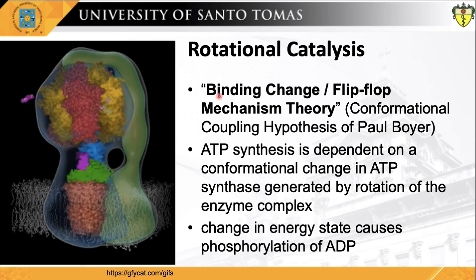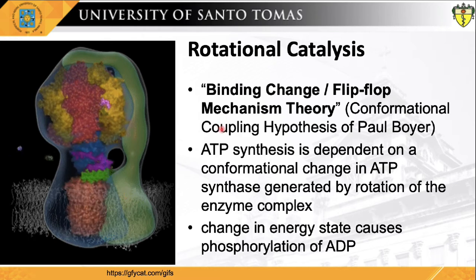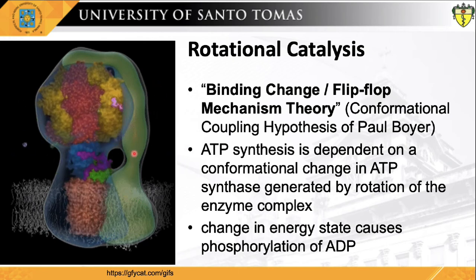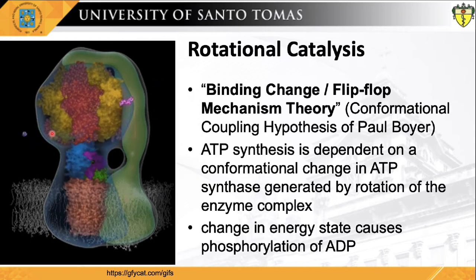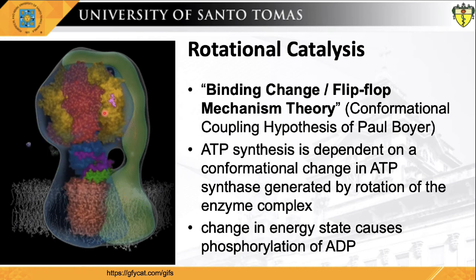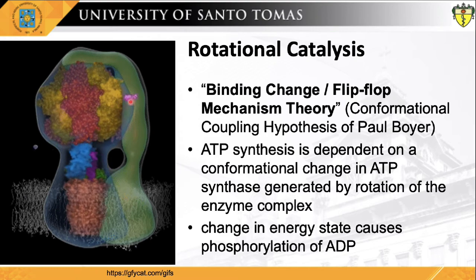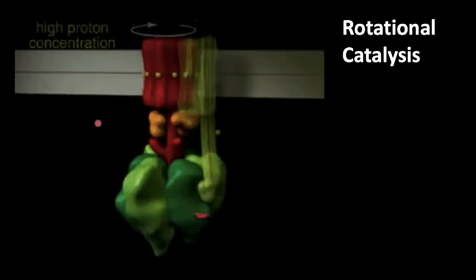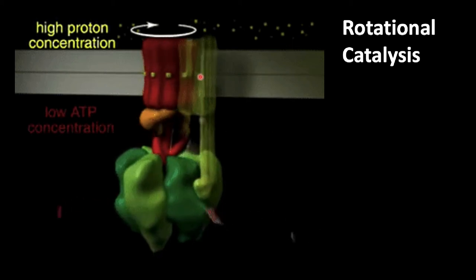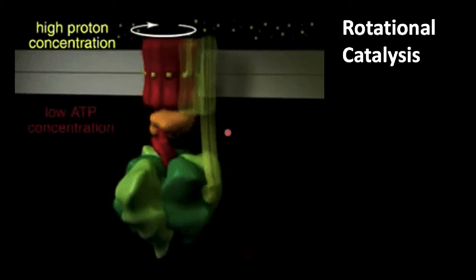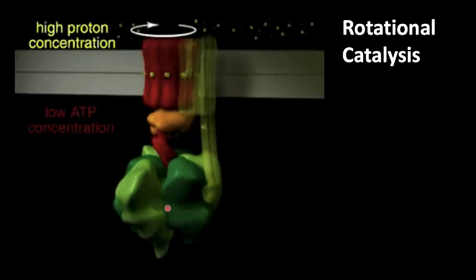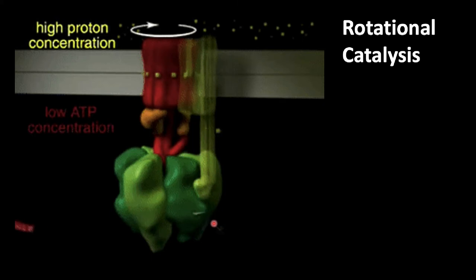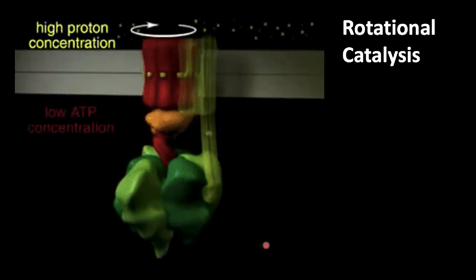The binding change or flip-flop mechanism theory, or the conformational coupling hypothesis elucidated by Paul Boyer in the 1960s and 70s, postulated that ATP synthesis is dependent on a conformational change in ATP synthase generated by rotation of the enzyme complex. The changes in energy states of the different subunits cause a series of events leading to the phosphorylation of ADP to ATP. This is an animated representation of FO rotation causing conformational changes in the F1 headpiece, showing entry of ADP and inorganic phosphate and release of ATP.